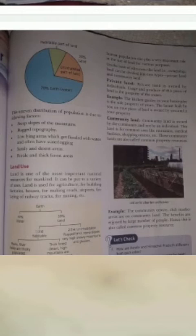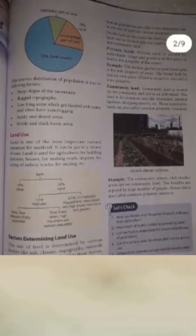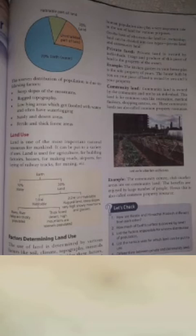Now we will learn how the land is used. We use land in many kinds of ways. Land is one of the most important natural resources for mankind. It can be put to a variety of uses. Land is used for agriculture, for building, for factories, houses, for making roads, airports and laying off railway tracks and mining.